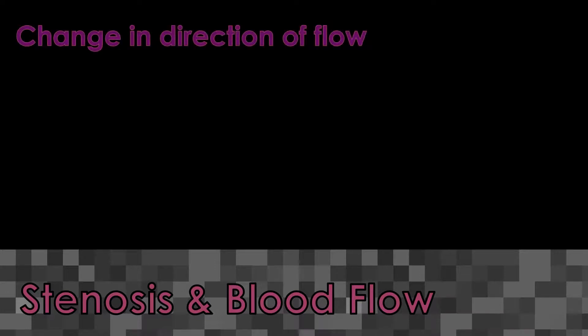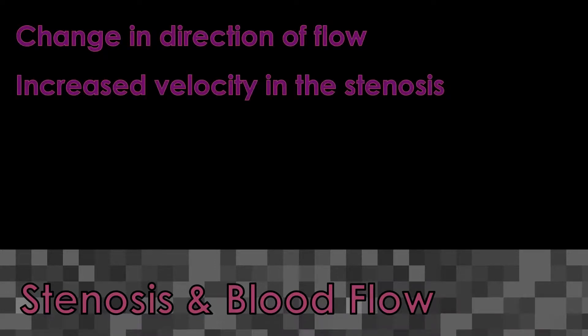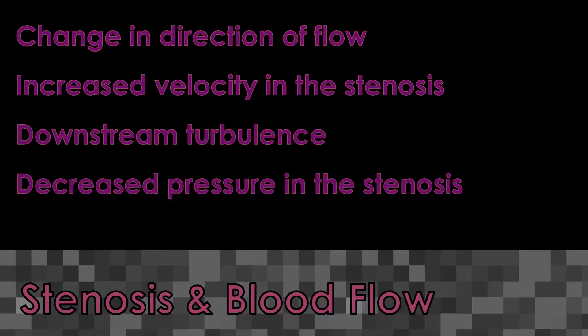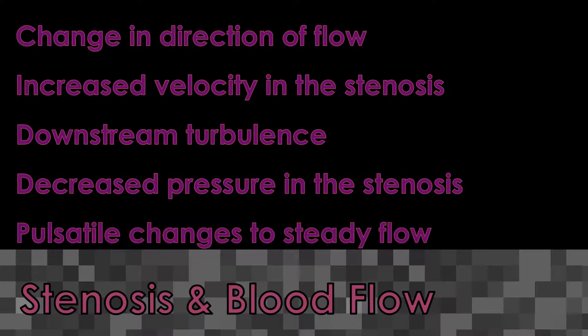A stenosis can have multiple effects on the blood. They include change in direction of flow, increased velocity in the stenosis, downstream turbulence, decreased pressure in the stenosis, and pulsatile changes to steady flow.